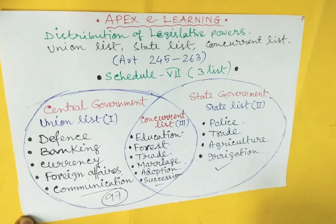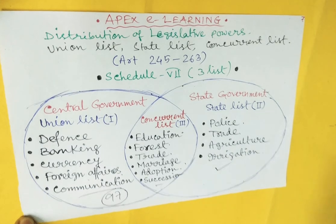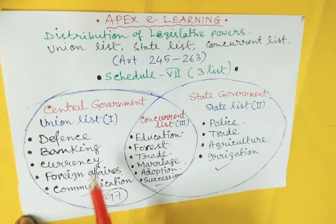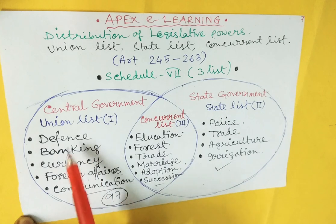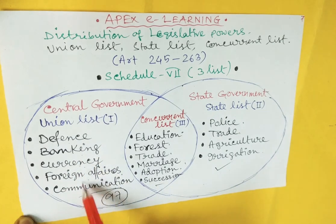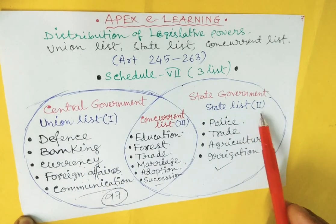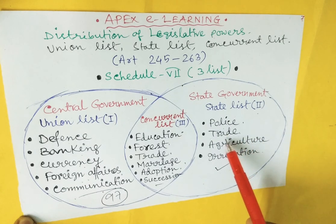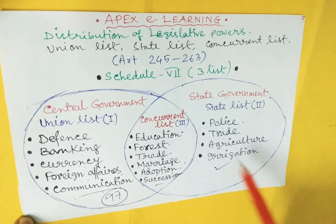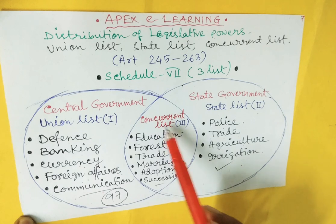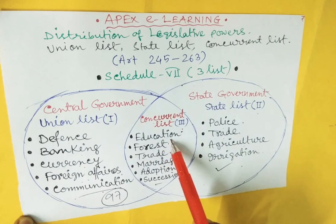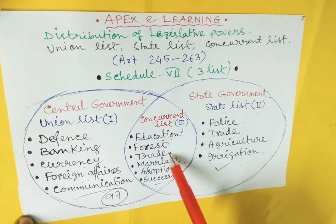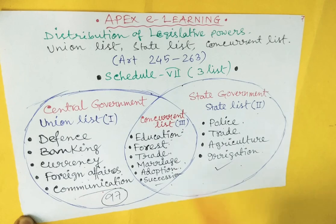Now we will discuss subjects under the three lists in our constitution briefly. Under the union list, there are defence, banking, currency, foreign affairs, and communication. Under the state list or list two, there are police, trade, agriculture, and irrigation. Under list three, the concurrent list, there are education, forest, trade, marriage, adoption, and succession.